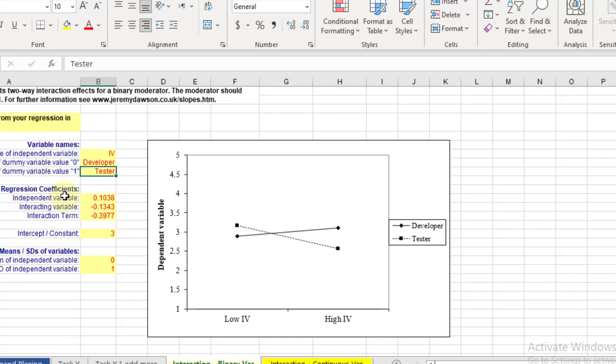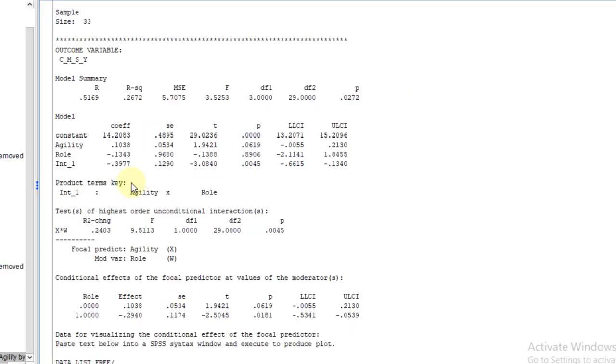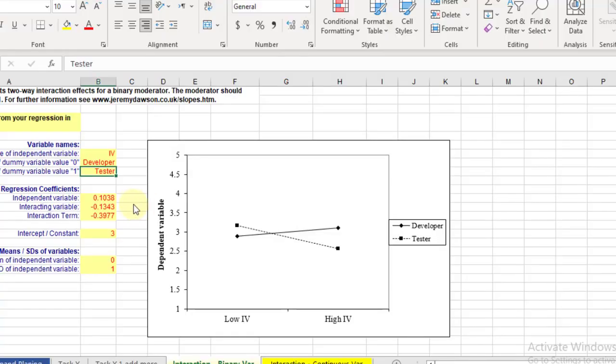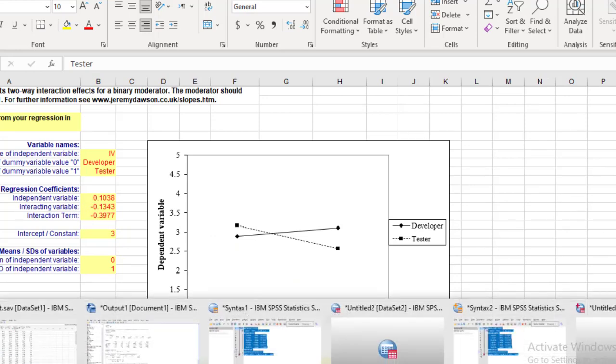After that, we have to enter the regression coefficients, the independent variable 0.1038. You can see from the results of the regression that a regression coefficient for the agility is 0.1038. The role is minus 0.1343. So again, minus 0.1343 and the interaction term is minus 0.3977. So we got here minus 0.3977.